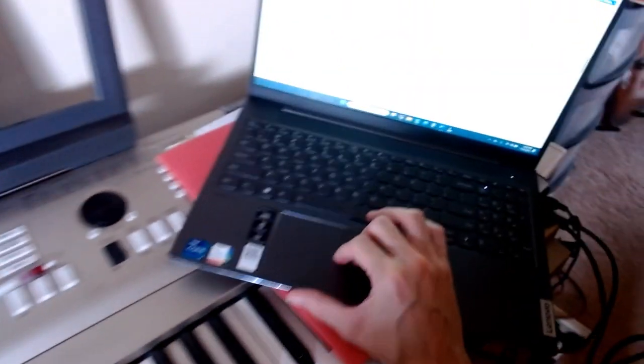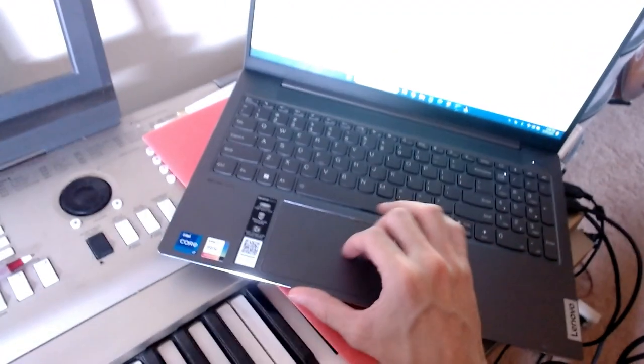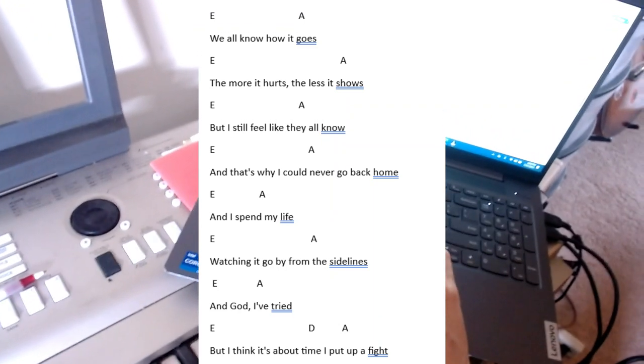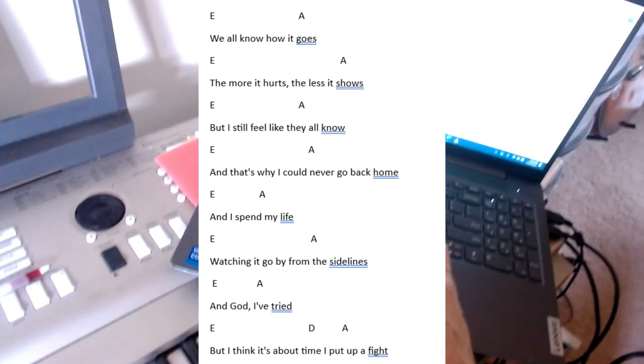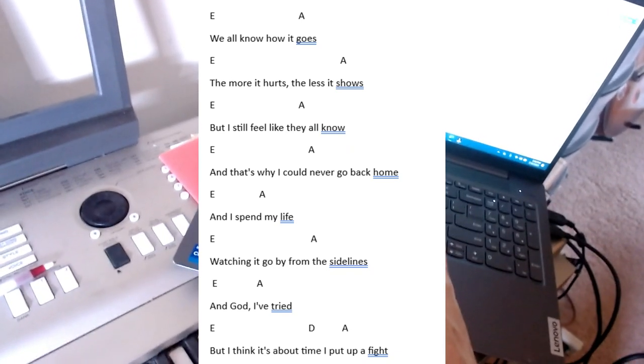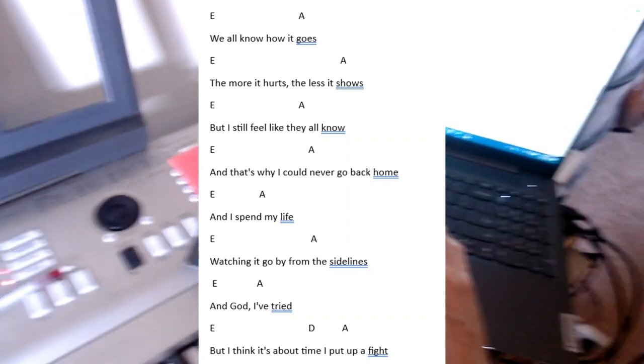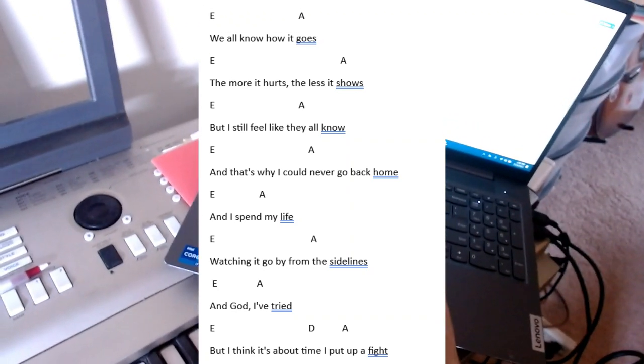B to an A. Right, kind of just tagging that line that we just had there for the instrumental. Then we just have a whole ton of E to As, E to As. I think that last line, again, they just change it up a bit where they have that quick D to that A, and then again, just that chorus there.